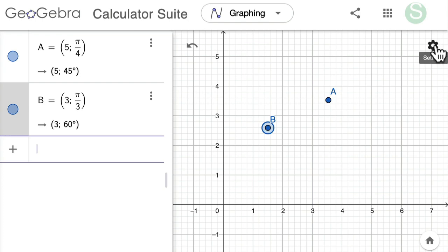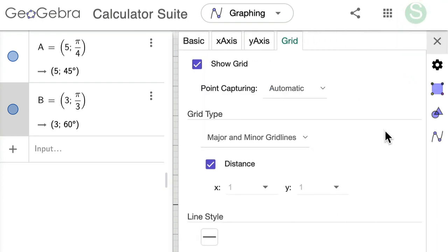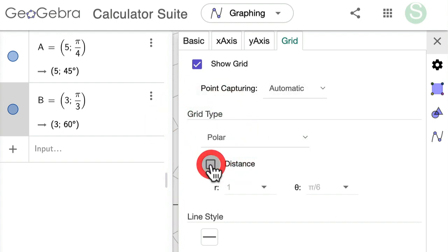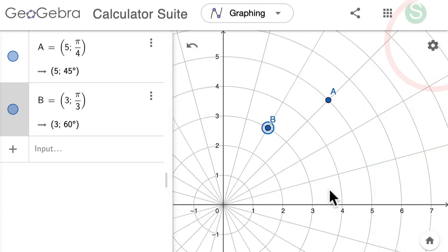And I can click over here on settings, go to settings. Under grid on grid type down here, you can toggle to polar. And then I go to distance and type in 12ths because I can then see all those key angles in a unit circle.